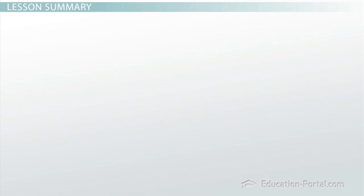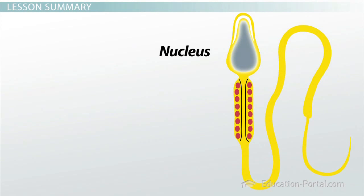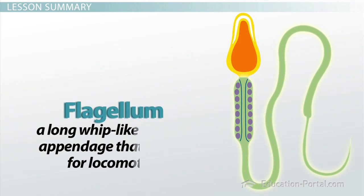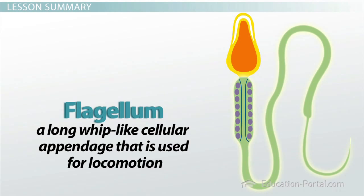Mature sperm have a nucleus that contains the haploid genome and not much else. They also have an acrosome cap, which will be used to penetrate the outer layers of the ovum so that the sperm can get inside. In addition, they have a single flagellum, which is a long whip-like cellular appendage used for locomotion, lashing it back and forth to propel the sperm forward.